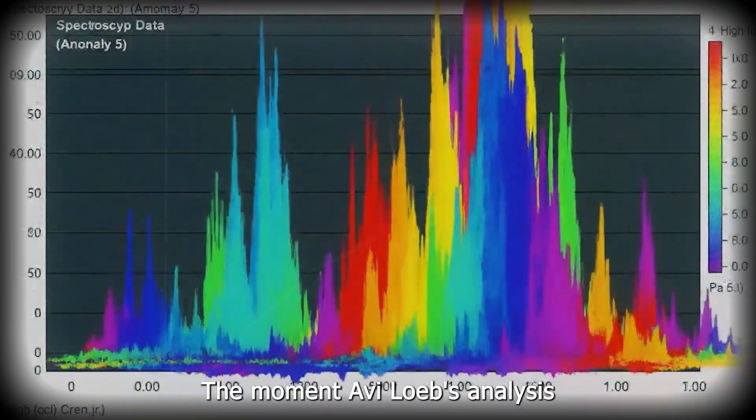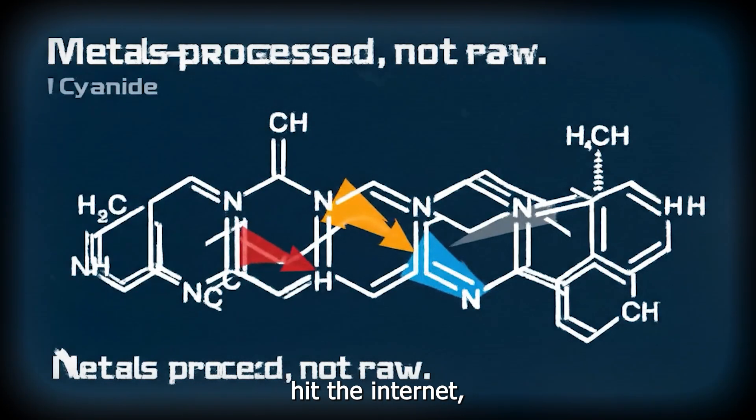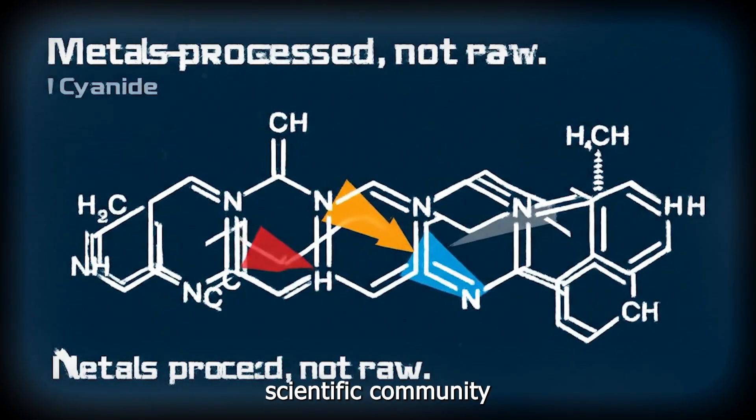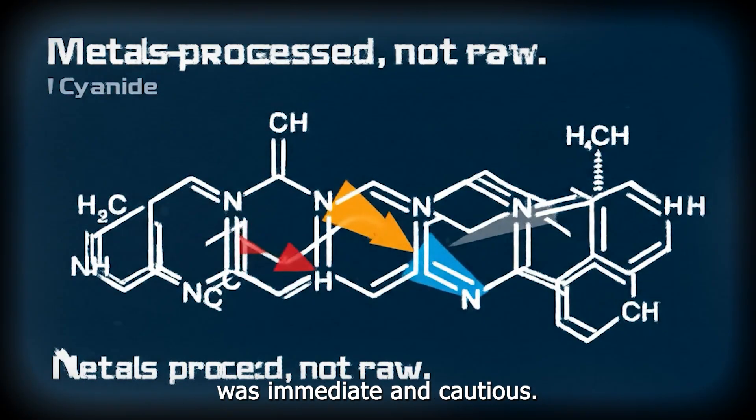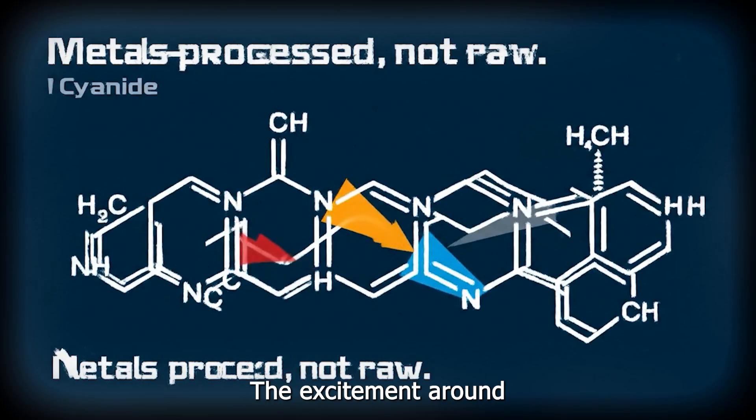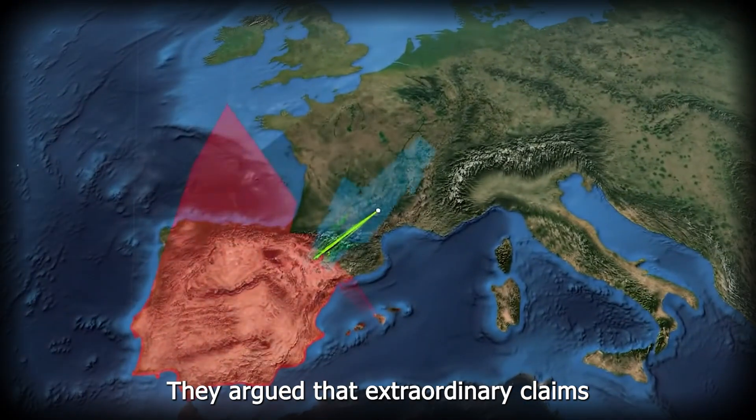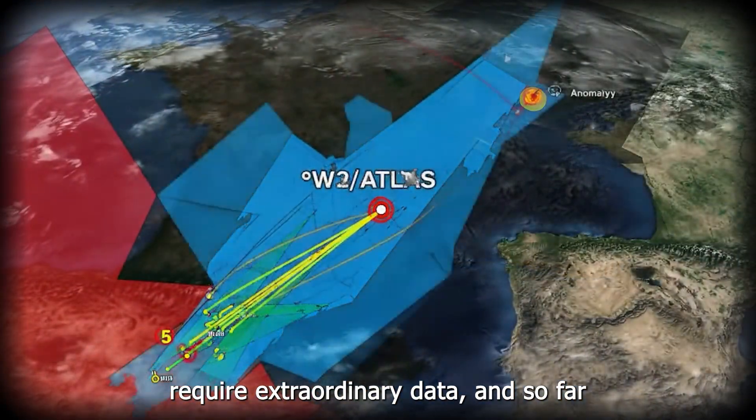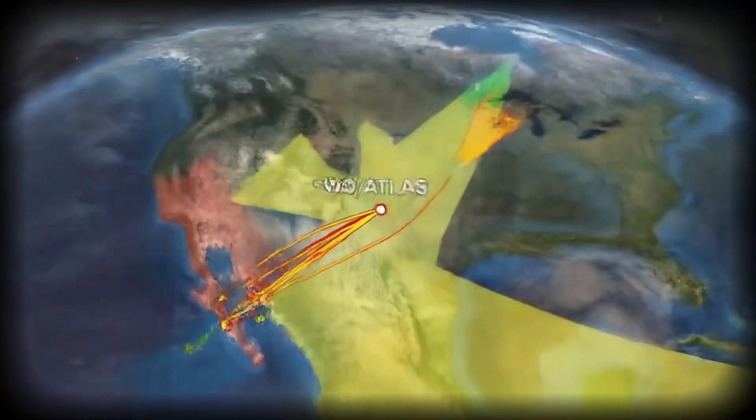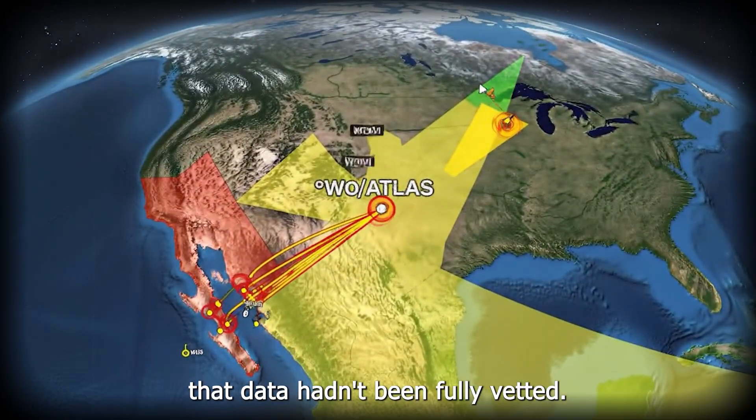The moment Avi Loeb's analysis hit the internet, the response from the broader scientific community was immediate and cautious. The excitement around 3i Atlas was undeniable, but astronomers who had spent their careers studying comets warned against letting wonder eclipse method. They argued that extraordinary claims require extraordinary data, and so far, that data hadn't been fully vetted.